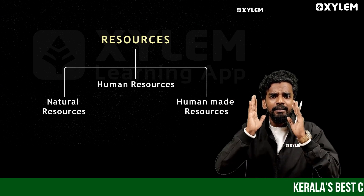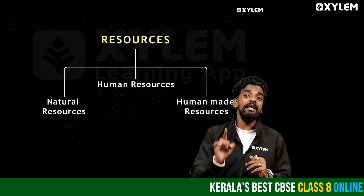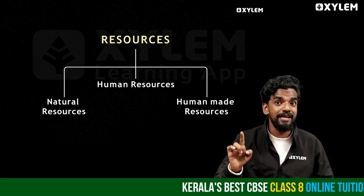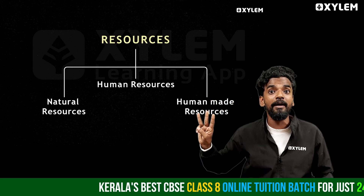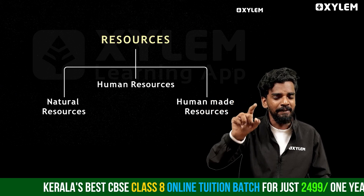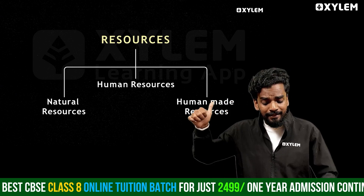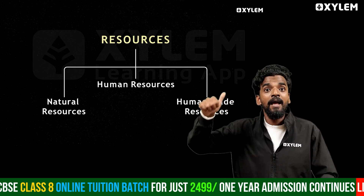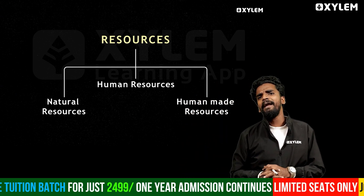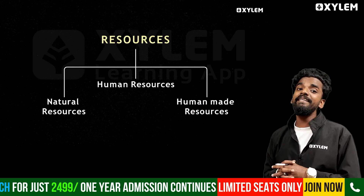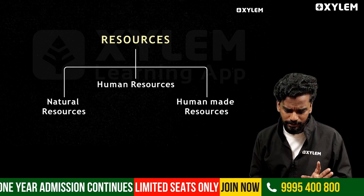So we can say that the three types of resources are: the first one is natural resources, the second one is human resources, and the third one is human-made resources. In this video, I will be discussing only natural resources.